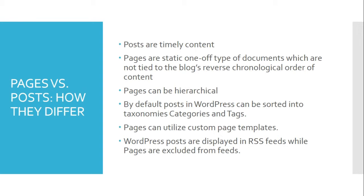By default, posts in WordPress can be sorted into taxonomies, categories, and tags. Pages do not have categories or tags. One way to differentiate is with respect to utilization — pages can utilize custom page templates, whereas posts cannot utilize this feature by default in WordPress. And lastly, WordPress posts are displayed in RSS feeds, while pages are excluded from feeds.